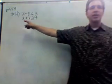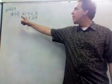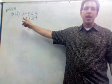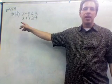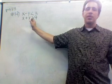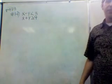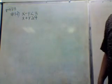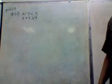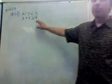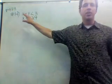This is page 423, number 14. We have x minus y is less than 3, and x plus y is greater than or equal to 4. What we're doing in this section is solving each system by graphing. This is a system of inequalities.